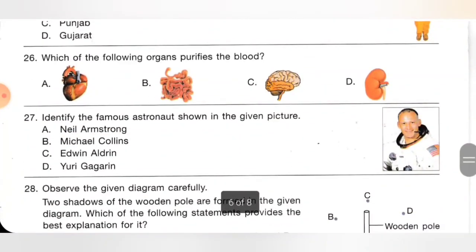Twenty-sixth one: which of the following organs purifies the blood? Option A: heart, B: intestine, C: brain, D: kidney. The kidney is the internal organ which purifies the blood. Option D is the correct answer.